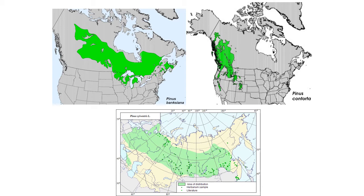Jack pine, Pinus banksiana, is an eastern to mid-western species across much of Canada, seen in the Great Lakes states and the northeast. Pinus contorta, lodgepole pine, is the western pine of the boreal forest, found in western Canada and the Rocky Mountains. Pinus sylvestris, Scots pine, is the dominant pine species of the boreal forest in Eurasia.